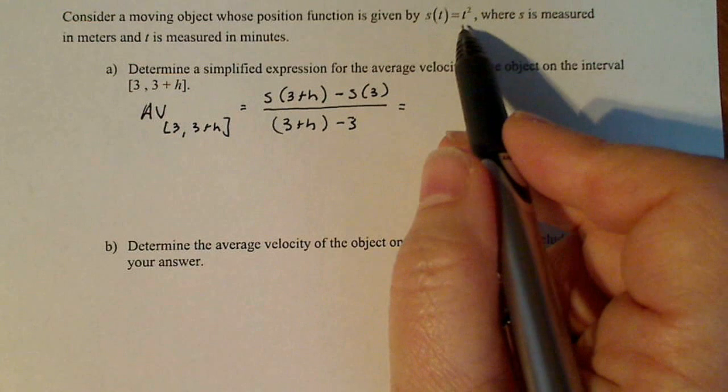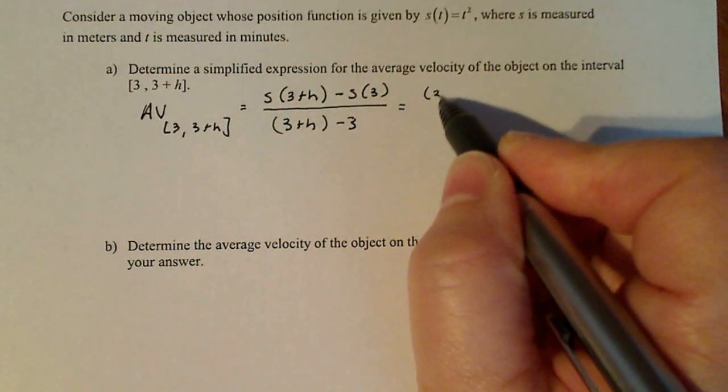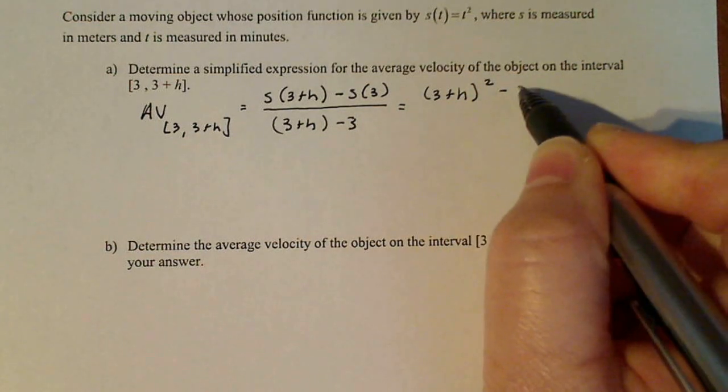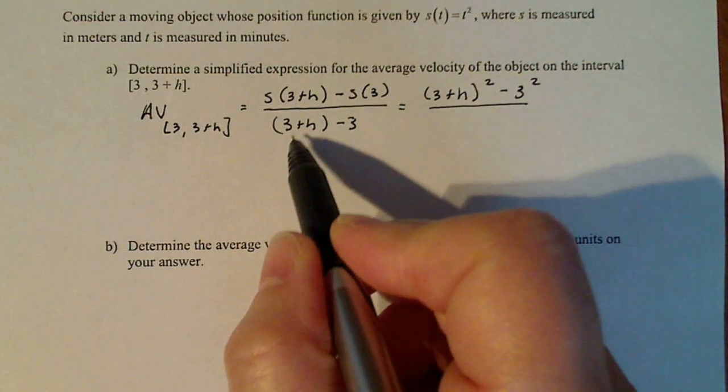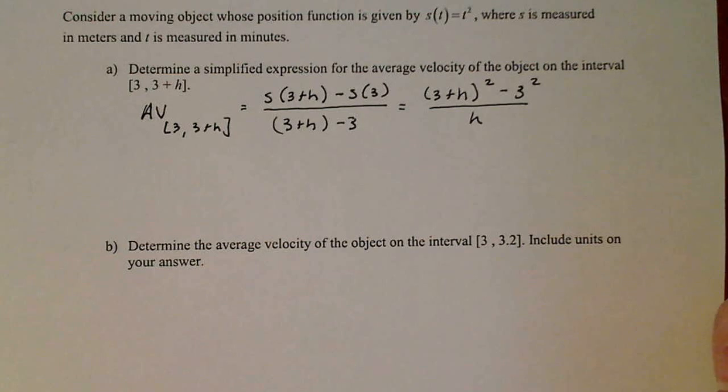So this is equal to, well, s is t². So I'm going to replace the t with 3+h. So it becomes (3+h)² - 3². I'm going to input the 3 into the t². And down here, I can just simplify 3 - 3 is 0. So I'm left with just h in the denominator.